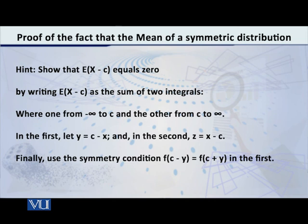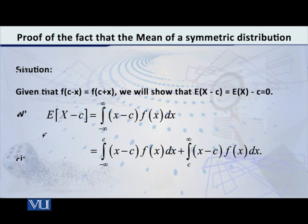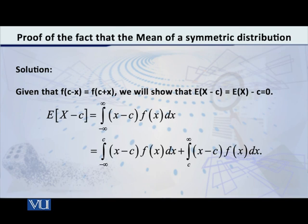Now that I have given you all the hints, let us actually implement them one by one. First, let us write the integral. The expected value of (X minus c) equals the integral from minus infinity to infinity of (x minus c) multiplied by f(x) dx. After this, we break it into two parts: the integral from minus infinity to c of (x minus c) f(x) dx, plus the integral from c to infinity of (x minus c) f(x) dx.